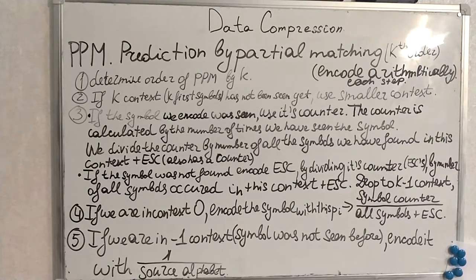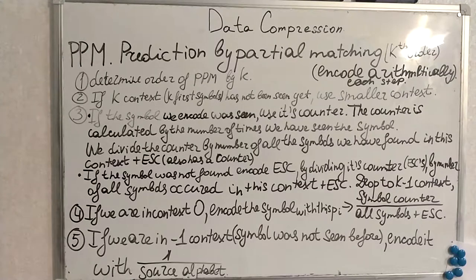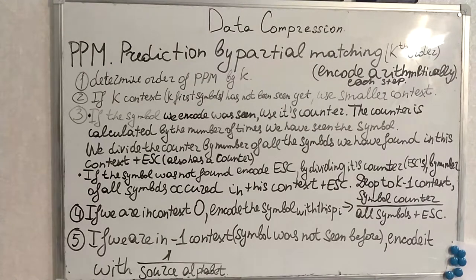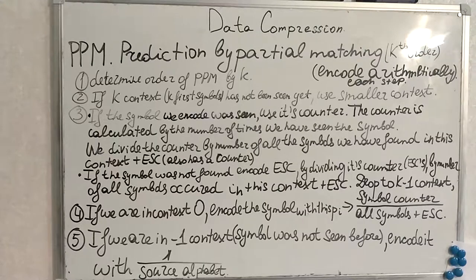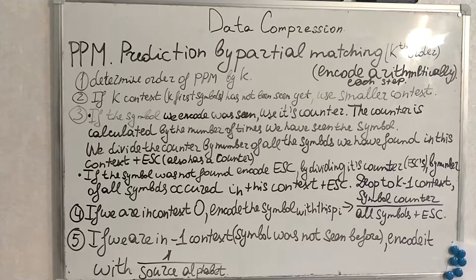First, we determine the order of PPM. If this order is, for example, 5, we will use five symbols as context. If our context has not been seen yet, we use a smaller context. If the symbol we encode was seen, we use its counter — the number of times we have seen the symbol — and divide that counter by all the symbols we have found in this context plus the counter of the escape symbol. If the symbol was not found, we encode the escape symbol by dividing its counter by the number of all symbols occurred in this current context plus the counter for the escape symbol, and we drop to lower context.